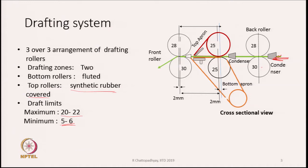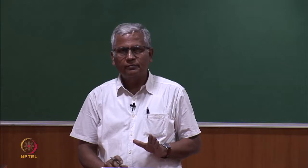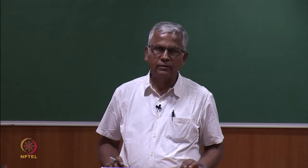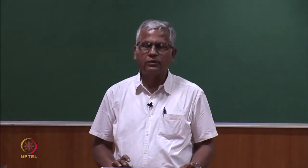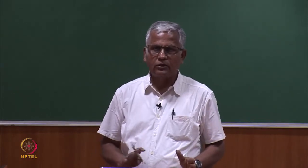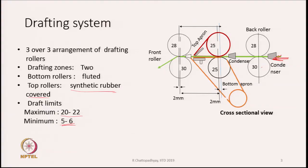Guiding means making sure that the fibers between the aprons keep moving at the speed of the middle roller — they should not move in an erratic fashion. As long as the fibers are gripped between the top and bottom aprons, they will continue to move at the speed of the aprons. They then pass through a small condenser and enter the nip of the front pair of rollers, which runs at a faster speed than the aprons — hence there is a draft, leading to stretching of the sliver.